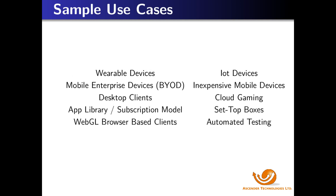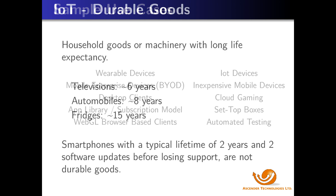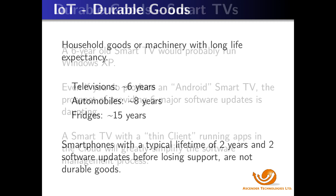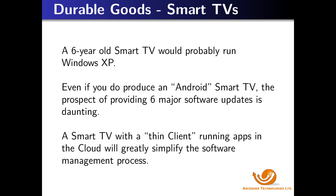Once we have implemented the infrastructure for Android in the cloud, multiple use cases become possible. Durable goods are defined as goods with long lifetimes. Google updates Android software versions annually, and Android smartphones are replaced every two years on average with two major software updates before support is dropped. Smart TVs, however, are replaced every six years on average and would need six major software updates. By hosting apps in the cloud, a future smart TV would remain relevant for many years after purchase.